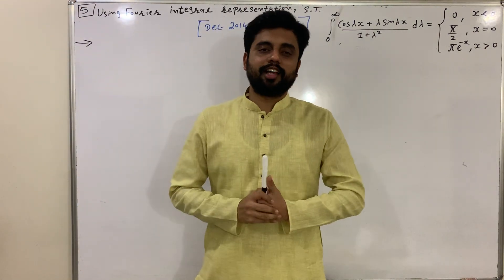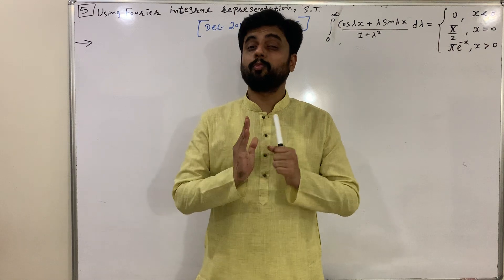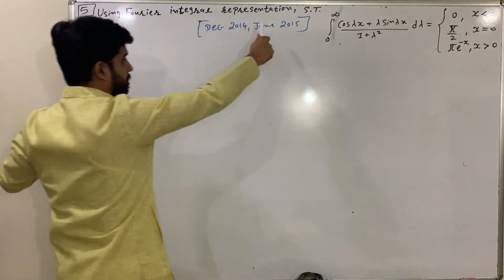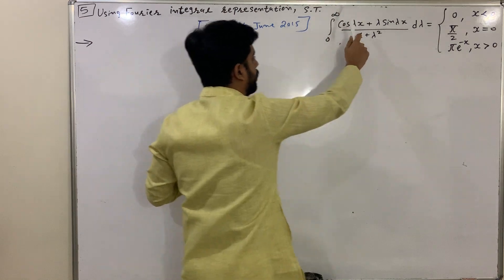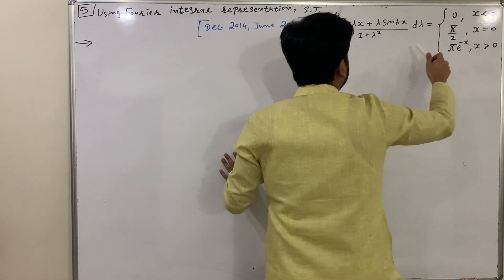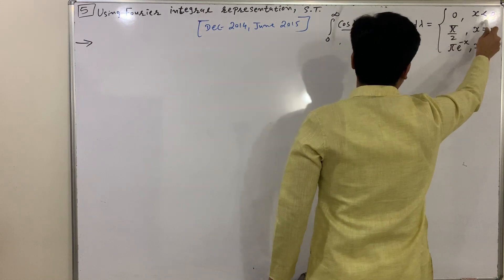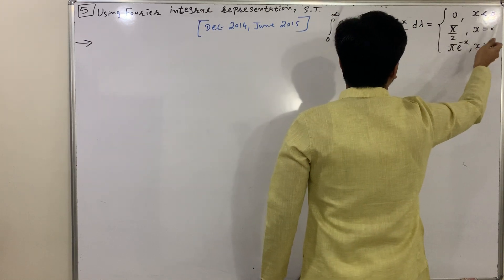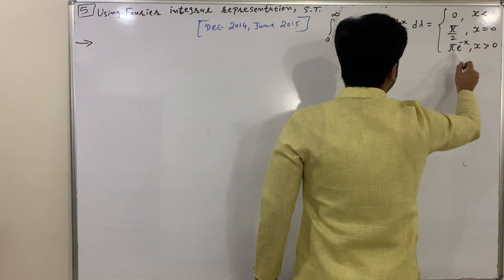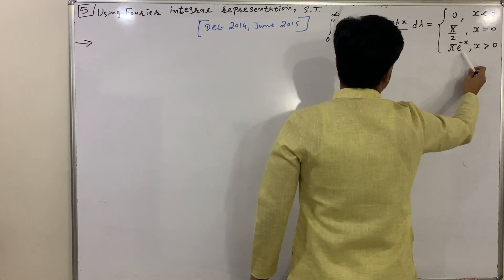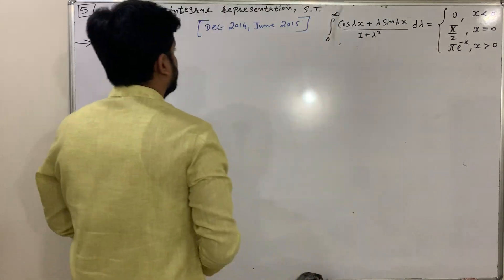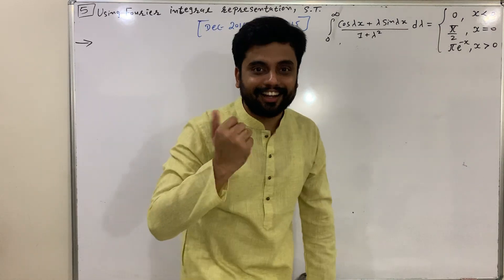Hello everyone, I am Pratik Panchwal from Ingenious Classes. We are starting with Fourier integral. Using the Fourier integral representation, show that the integral from 0 to infinity of (cos λx + λ sin λx) / (1 + λ²) dλ equals 0 when x < 0, π/2 when x = 0, and π·e^(−x) when x > 0.